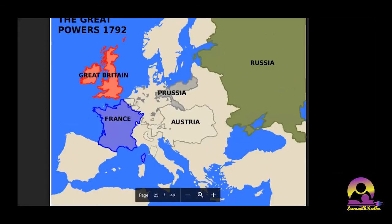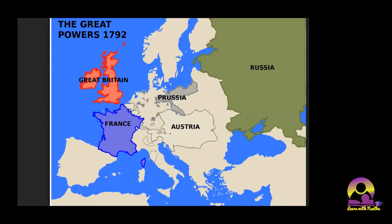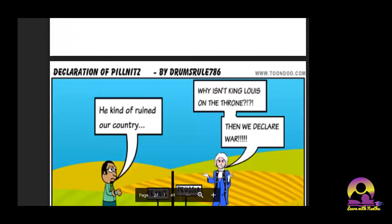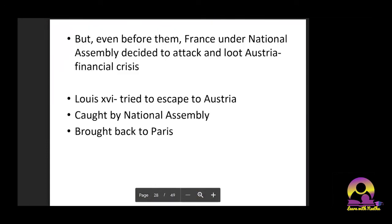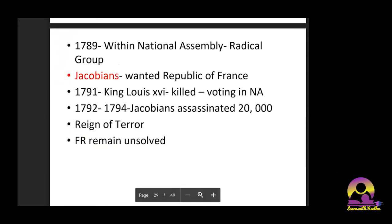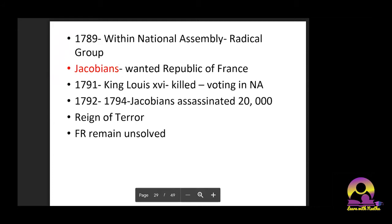At this time, the five major players were France, Prussia, Austria, Great Britain, and Russia. The National Assembly, which was ruling France, decided to attack and loot Austria due to the financial crisis. Louis XVI tried to escape to Austria but was caught and brought back to Paris. Within the National Assembly, another group slowly emerged with radical thoughts — they were called the Jacobins. The Jacobins wanted a republic of France.